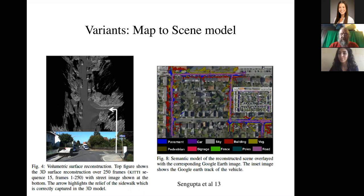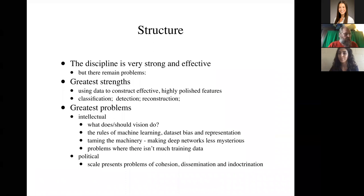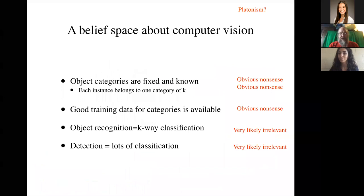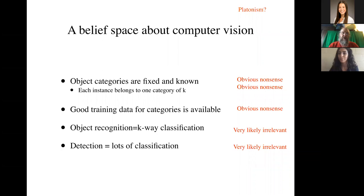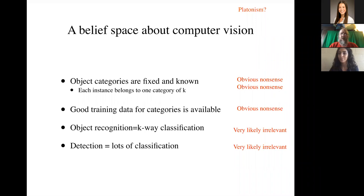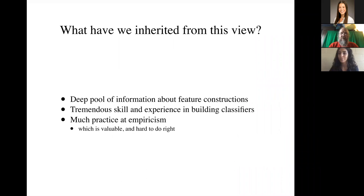Okay, so having shown some of the successes of the discipline, I'm going to talk a little bit about the things that we need to understand, the big intellectual problems in the discipline. They're very engaging because they're quite easy to state, but they seem to be very difficult to engage. So everything I've shown you comes from what I like to call a belief space about computer vision. It says object categories are fixed and we know what they are. We can get good training data. Object recognition is going to be K-way classification and detection is going to be lots of classification. Now there are good reasons to doubt all of these points. There is often very little training data and can be very difficult to get. Objects can belong to more than one category, which is annoying because you don't really know what to call it if it belongs to more than one category. However, what we've inherited from believing that computer vision was like this is a tremendous amount of information about feature constructions. We're really, really good at building image classifiers and a lot of practice of empiricism, which is valuable and it's hard to do right.